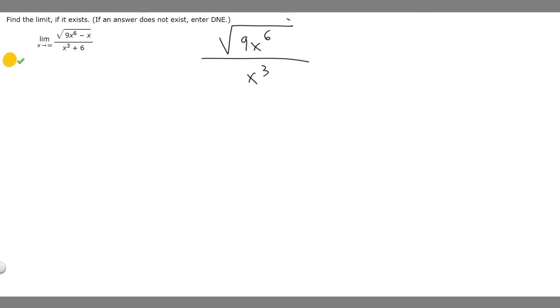Write it like that, and then on top what we're going to do is simplify this. We can simplify this by just saying it equals 9x to the 6th to the 1 half, because it's basically the same thing. To the 1 half just means square root it.